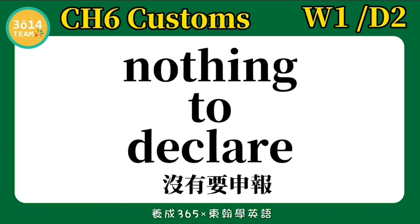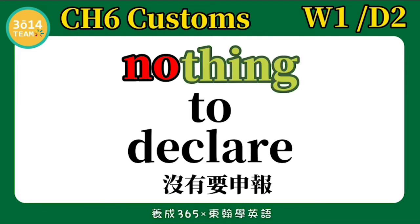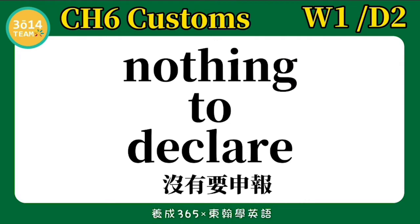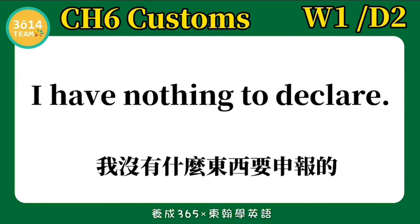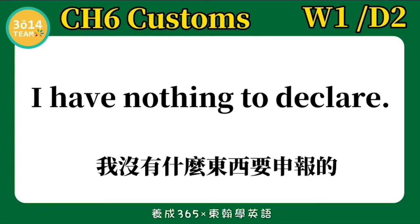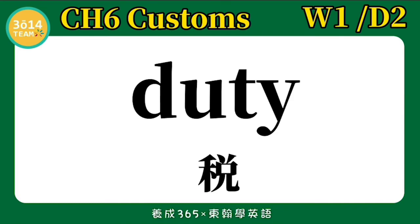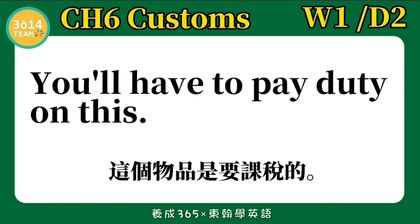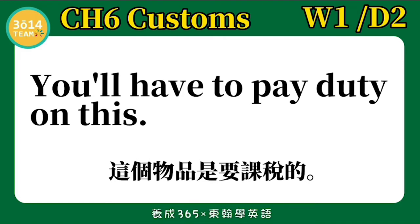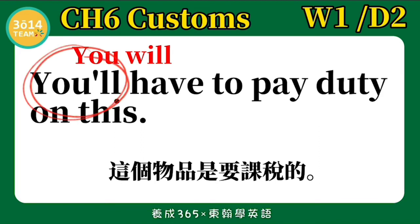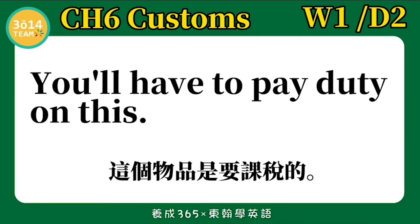Nothing to declare 没有要申报. N-O 在这里不念 no, 是念 na, T-H-I-N-G 念 thing. Nothing. Nothing to declare. I have nothing to declare 我没有什么东西要申报的. 跟着我念一次: I have nothing to declare. Duty 税、税金. You'll have to pay duty on this 这个物品是要课税的. 跟着我念一次: You'll have to pay duty on this. You'll 是 you will 的缩写. You'll have to pay duty on this.